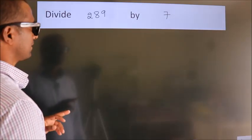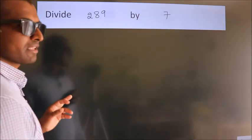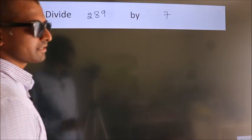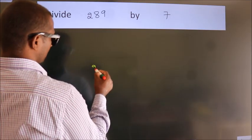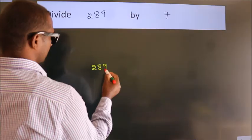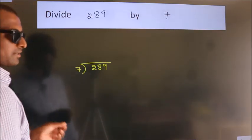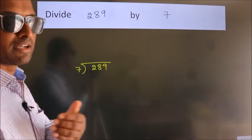Divide 289 by 7. To do this division, we should frame it in this way. 289 here, 7 here. This is your step 1. Next.